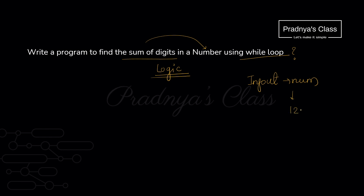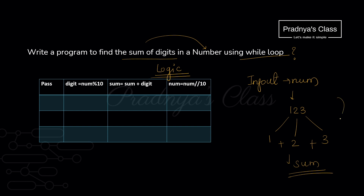Let's understand the logic. Assume a 3-digit number: 123. First we need to separate the digits, then add them, and finally print the sum. From the previous program we know how to separate a digit — taking modulus by 10. We'll use the same approach here and dry run to understand each pass. It's a repetitive task to segregate the digits and add them, so we use a loop with three statements written inside it.